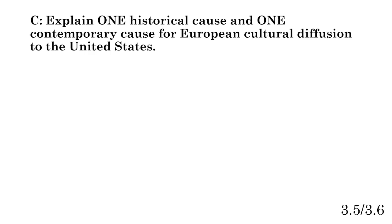Part C: explain one historical cause and one contemporary cause for European cultural diffusion to the United States. The College Board may ask you to give one cause of each type to see if you can address both sides of the question. They might make these worth two points as opposed to the normal one — one point for the contemporary cause and one for the historical cause.